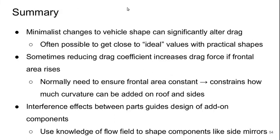To summarize: minimalist changes to vehicle shape can significantly alter drag. It's often possible to get close to ideal values with practical shapes through careful optimization. Sometimes reducing the drag coefficient can actually increase the drag force if the frontal area rises as a consequence. Normally we need to ensure the frontal area stays constant with any changes — this constrains how much curvature can be added on the roof and sides without negatively impacting occupant space. Interference effects between parts also guide the design of add-on components, such as side mirrors.